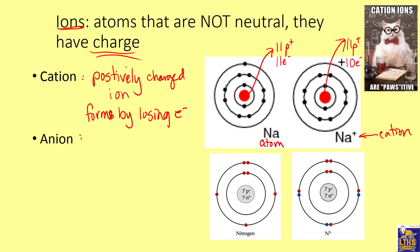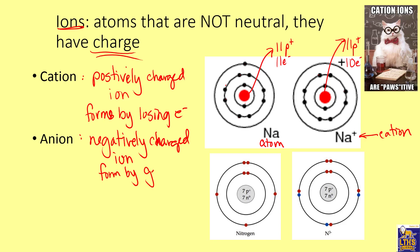If you can have a cation, you can also have an anion. An anion is a negatively charged ion and it forms by gaining electrons. For example, nitrogen has seven protons, seven neutrons, and seven electrons, making it neutral. But if it gains three extra electrons, it has ten electrons and becomes N with a three-negative charge.